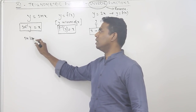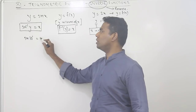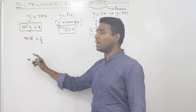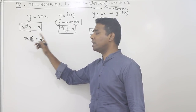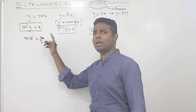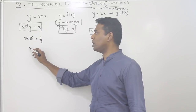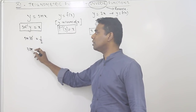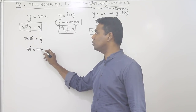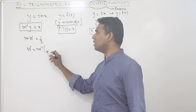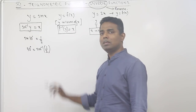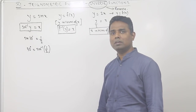Let's take an example. Sine 30 degrees is equal to one half. If we shift sine to the other side, 30 degrees equals sine inverse of one half.